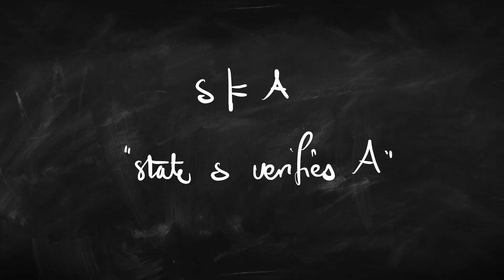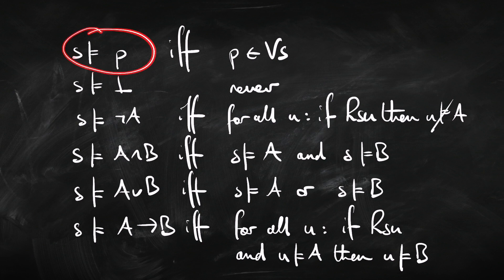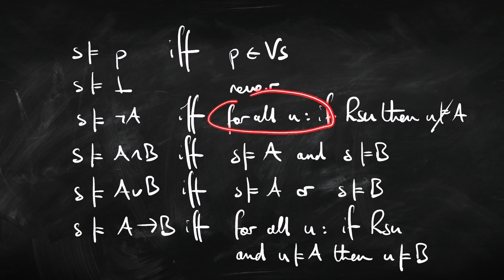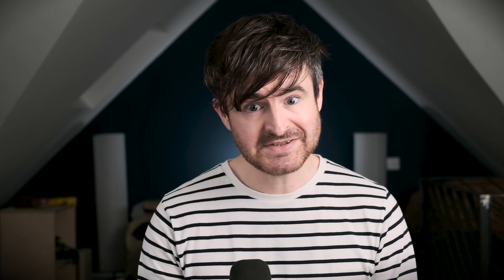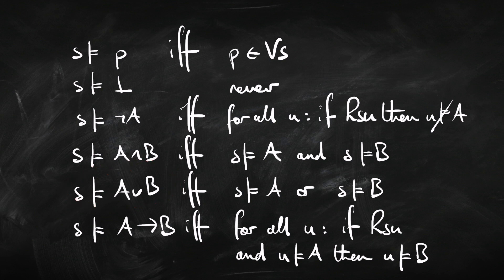We're going to build up the general idea of a state verifying a sentence — we read this as 'state S verifies sentence A.' A state verifies P, Q, or R just in case it's one of the sentences the valuation dealt out to that state. We're never going to verify the false constant. S verifies not-A just in case every state you can get to from S — including the current state, because we've got reflexivity — doesn't verify A. Two easy clauses: to verify A-and-B is just verifying A on its own and verifying B on its own; verifying A-or-B is just verifying A on its own or verifying B on its own.